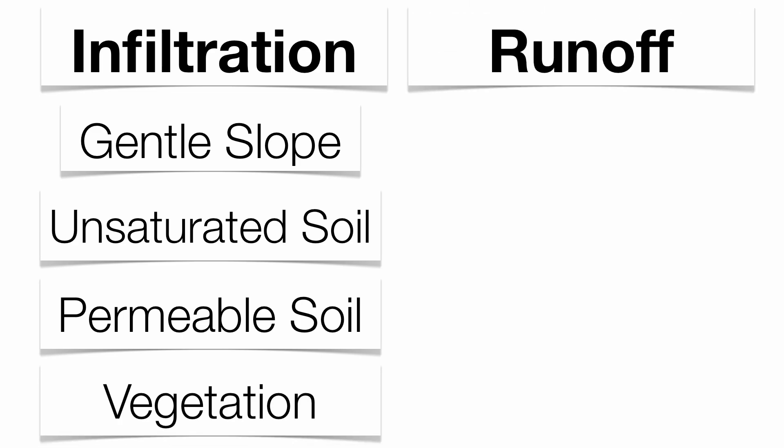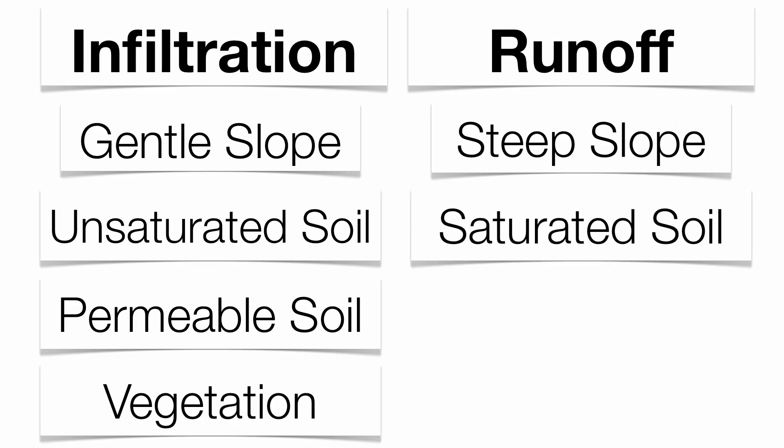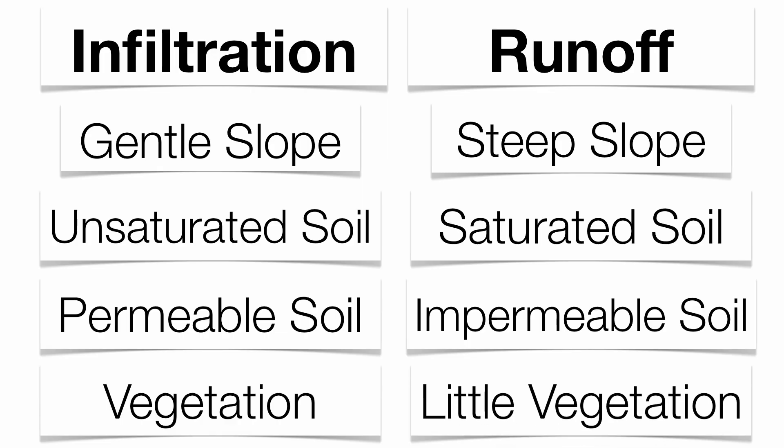In order for runoff to occur, you're going to need a very steep slope. The water is going to be totally soaked up in the soil, so the soil is going to be saturated. The soil can be impermeable. It will not allow water to pass through. And in many cases, you can have very little vegetation.